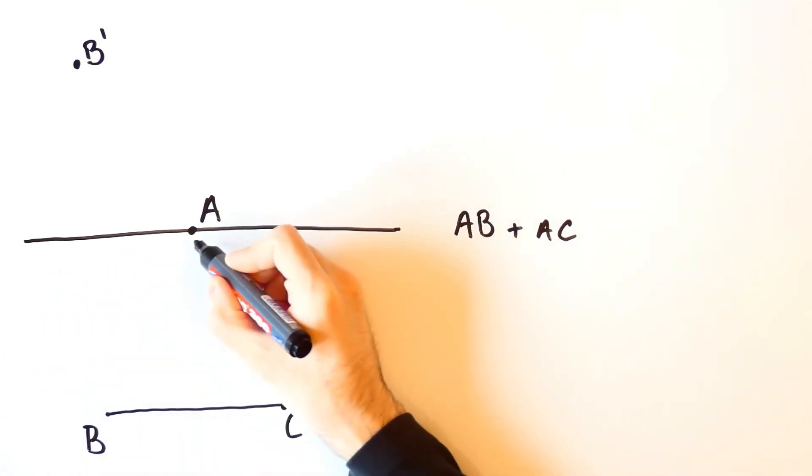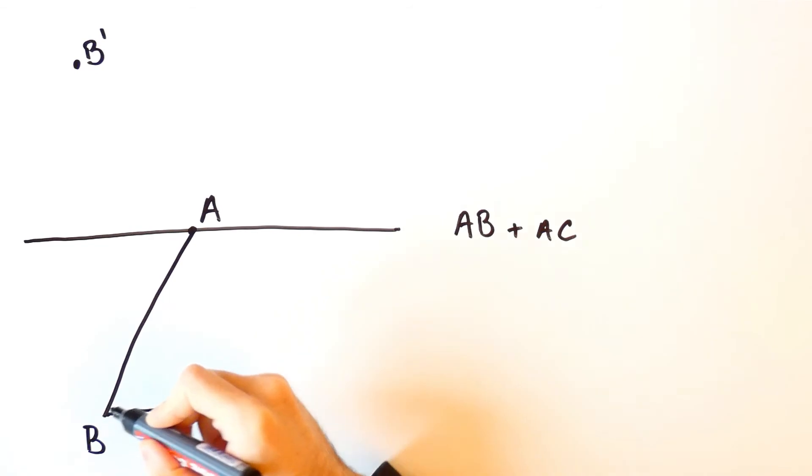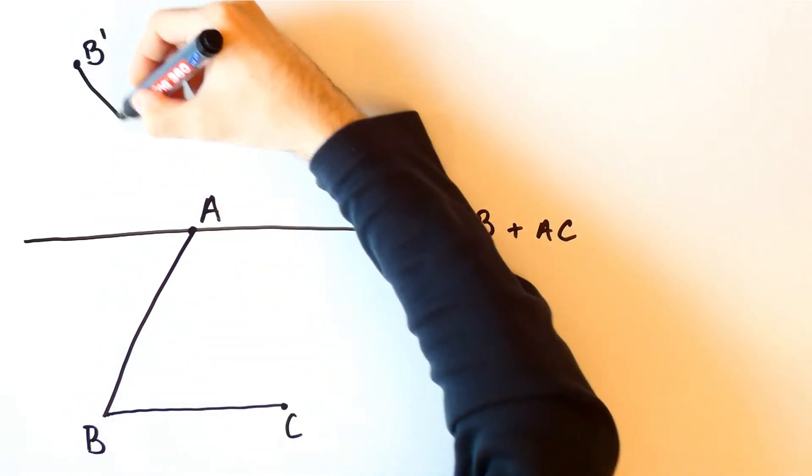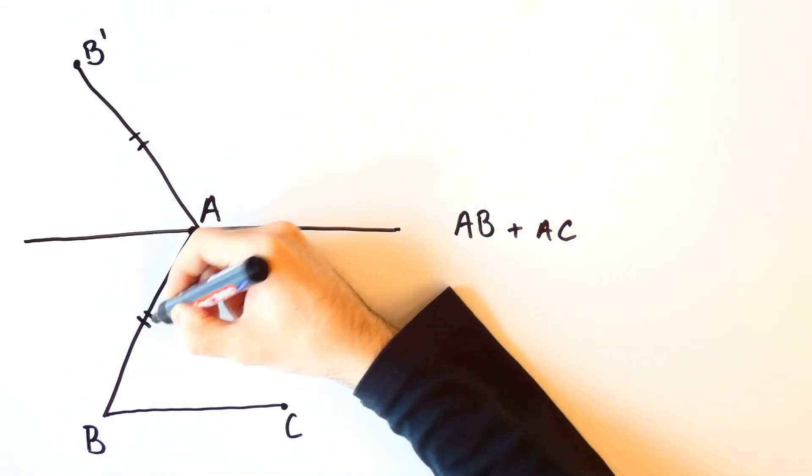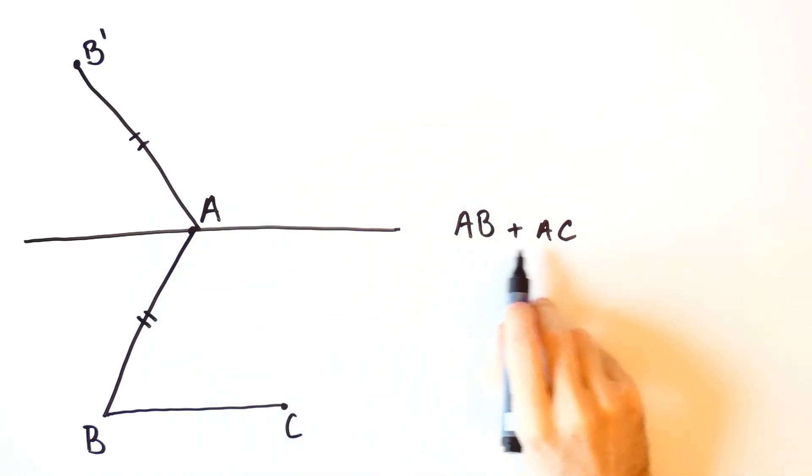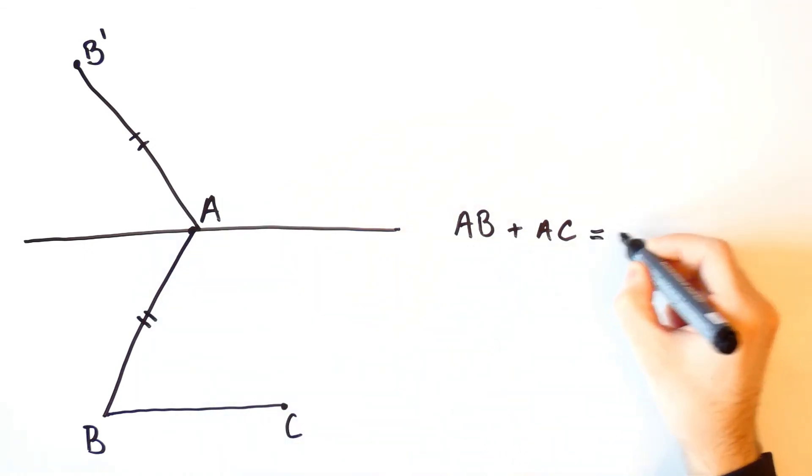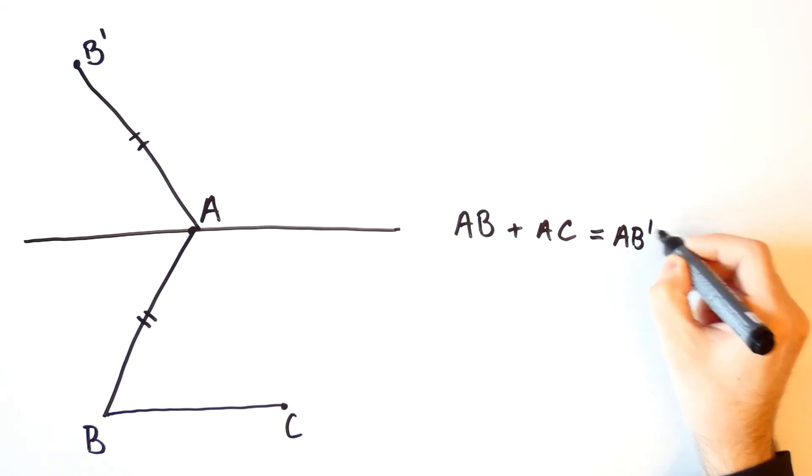Now AB is equal to AB prime, which means that AB plus AC is equal to AB prime plus AC.